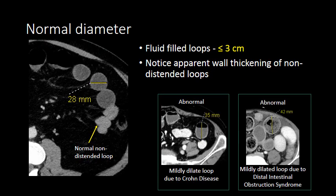When thinking about the normal diameter of the small bowel, fluid-filled small bowel loops should be 3 centimeters or less, though some people use a cutoff of 2.5 centimeters. When the bowel loops are not distended, they can appear to have wall thickening, as indicated by the yellow arrow. Here are two examples of abnormal bowel: air-fluid levels in a mildly dilated loop of jejunum related to Crohn's disease, and a patient with cystic fibrosis with distal intestinal obstruction syndrome showing a dilated loop of jejunum with pseudofeces.